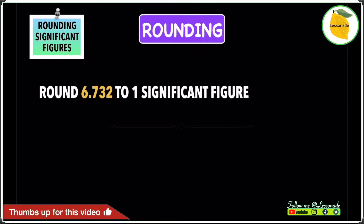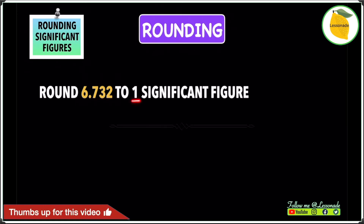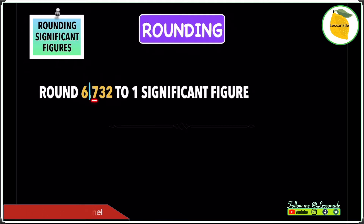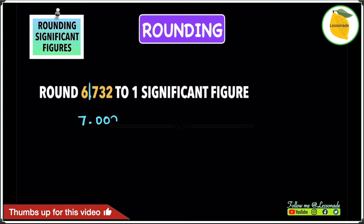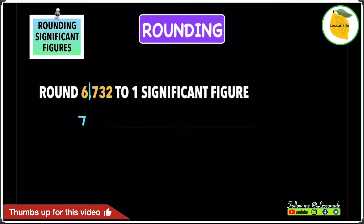Let's have a look at another rounding significant figure example. The question is: round 6.732 to the first significant figure. 6.732 is a decimal, but despite that, we do the same thing. The first significant figure is the first non-zero digit, which is 6. Draw a line after the 6, then look at the number after the line, which is 7. Since 7 is 5 or above, add 1 to 6, giving you 7. Because this is a decimal, you don't need to add trailing zeros, so the answer is simply 7.